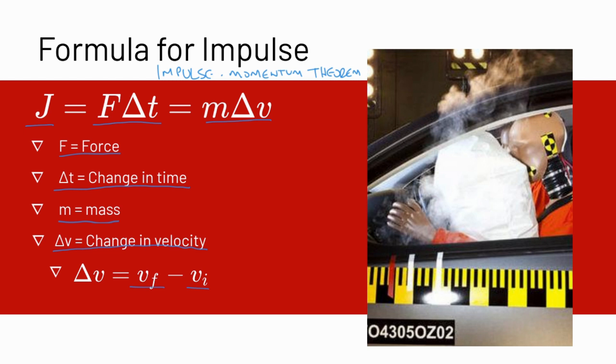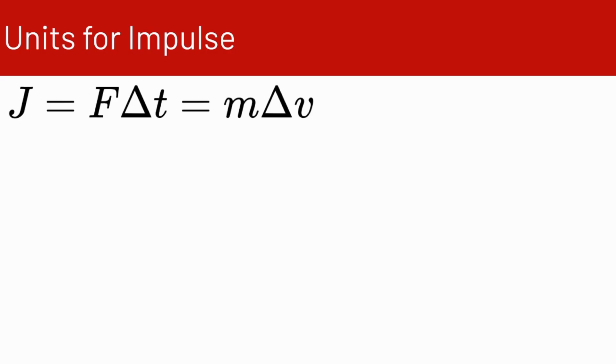We have the force times the amount of time it takes to apply that force is equal to our mass times the change in velocity. Remember that P is equal to mass times velocity, so mass times delta V is equal to the change in momentum. And force times time is how you change an object's momentum.